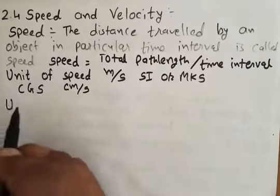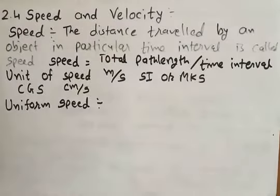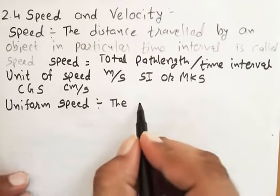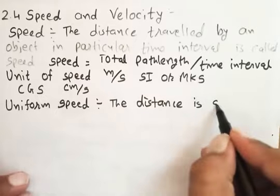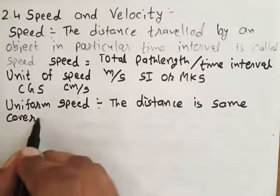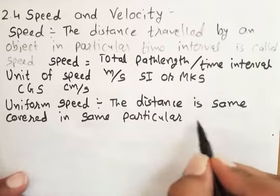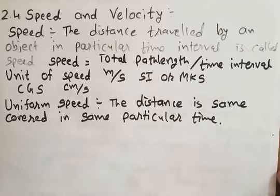Now I want to talk about uniform speed. In uniform speed, the distance covered is the same in the same particular time interval. That means uniform speed is also called constant speed.